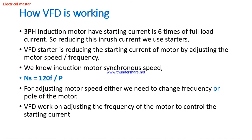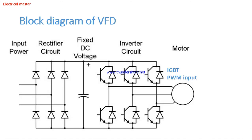The detailed working of VFD can be understood from the block diagram. There are three parts involved: rectification, filtering, and the inverting circuit. Normal AC power is connected to the rectification part. The bridge rectifier converts AC into DC, which is then connected to the filters, because the rectified DC is not pure — it is combined with noise and harmonics.